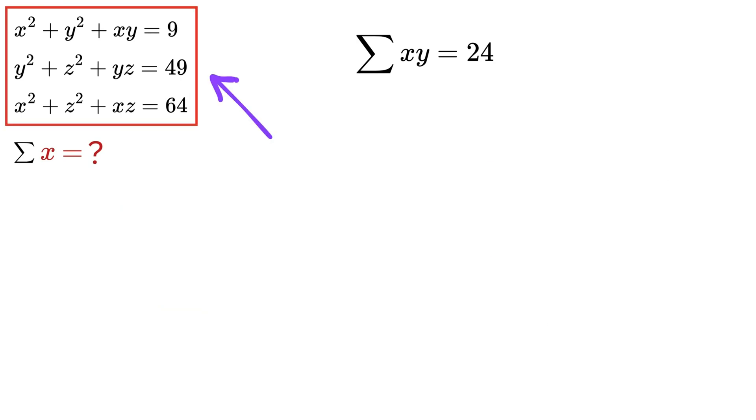Super nice! Now just add all these three equations. We get 2x² + 2y² + 2z² + Σxy = 9 + 49 + 64 or 122. Let us also express x² + y² + z² as Σx². Thus we get 2Σx² = 122 - Σxy.